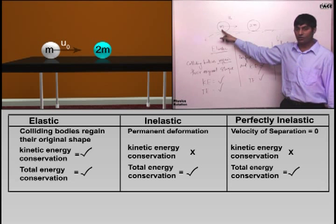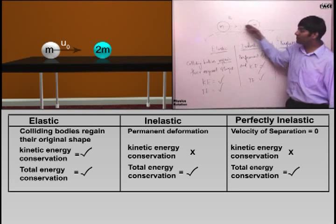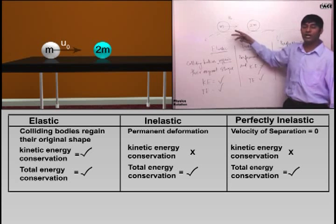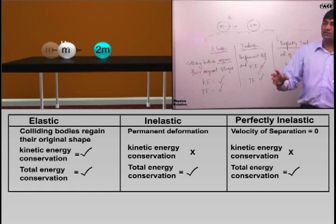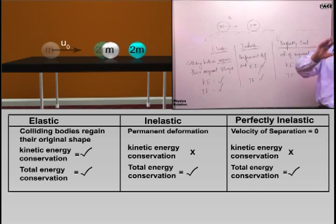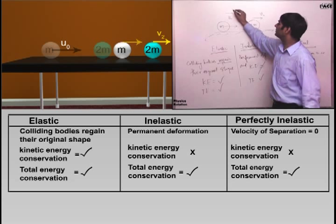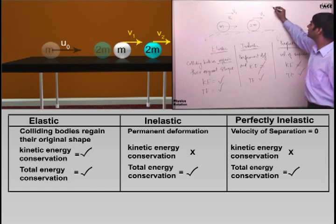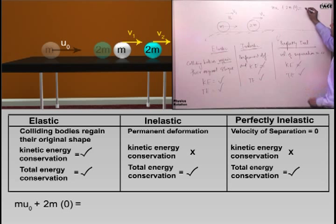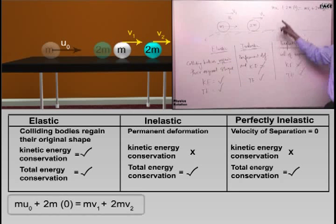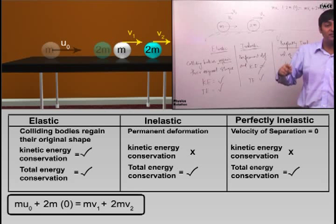In all cases, because no matter what energy conversion or deformation is happening, the external force on the system is zero. The forces between the colliding bodies are internal forces. Therefore we conserve the momentum of the system. So we can write momentum conservation as: m·u₀ + 2m·0 = m·v₁ + 2m·v₂. This equation represents conservation of linear momentum of the whole system.